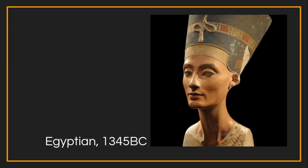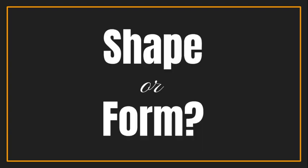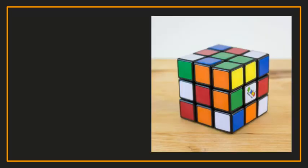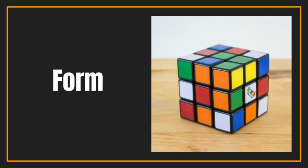I really want to practice identifying the difference between shapes and forms — sometimes it's tricky. Your job is to guess whether the image you're seeing is shape or form. First up: a Rubik's Cube. That's form — it has length, width, and height; you can hold it in your hand and it takes up space.